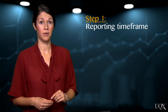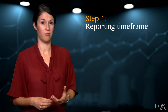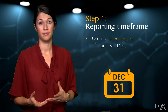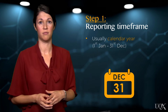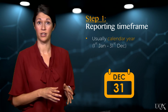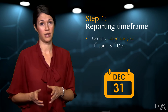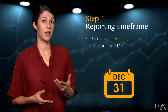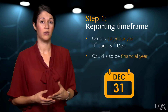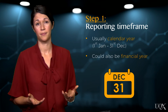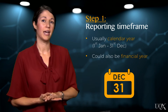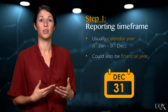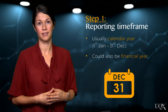The first step is to determine the reporting time frame. Usually this is a calendar year — that is, an organisation's emissions between the 1st of January and 31st of December. Alternatively, the reporting time frame could be the organisation's financial year. The choice should be made on what is most useful and consistent with the organisation's reporting needs.